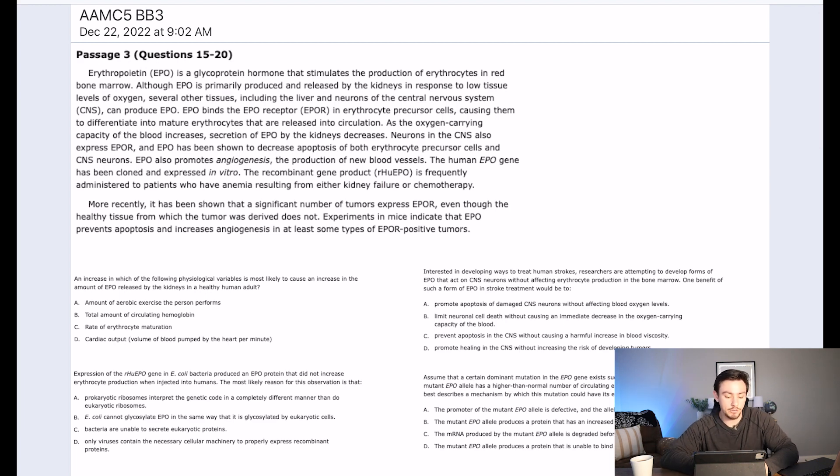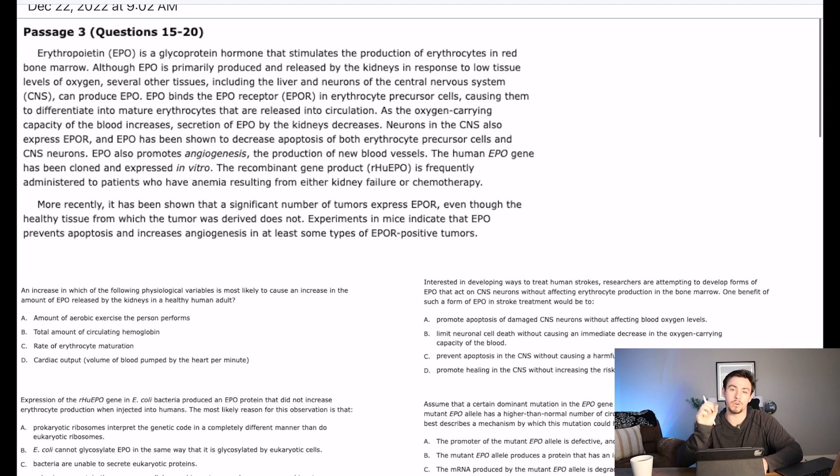So it says that erythropoietin, EPO, is a glycoprotein hormone. When we're flowcharting this out, we're focusing on basic sciences. We highlight those or we write them down. I highlight them for brevity's sake. Glycoprotein and hormones are both basic sciences that stimulates the production of erythrocytes, which is just a red blood cell, in red bone marrow. So if you didn't know that, then you could say that EPO leads to an increase in red blood cells.